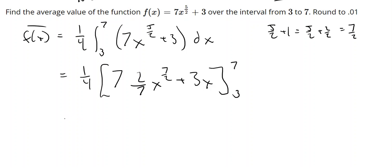Let's clean that up a little bit. These 7s appear to cancel out. So we have 2 times the 1 fourth would be 1 half x to the 7 halves plus 3 divided by 4 x evaluated from 3 to 7. And when you do that in decimals, you're going to get something approximately 433.36.